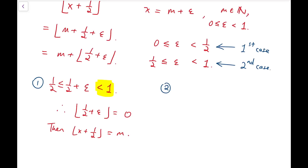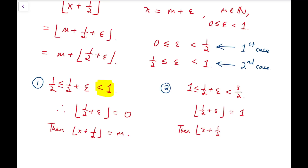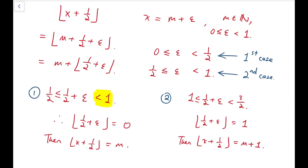For case 2, ε is between 1/2 (inclusive) and 1, so 1/2 + ε is between 1 and 3/2. The floor function of (1/2 + ε) equals 1, and so the floor function of (x + 1/2) equals m + 1. Now, the key trick is to double x: we write 2x = 2m + 2ε. In case 1, 2ε is between 0 and 1, so its floor is 0. In case 2, 2ε is between 1 and 2, so its floor is 1.